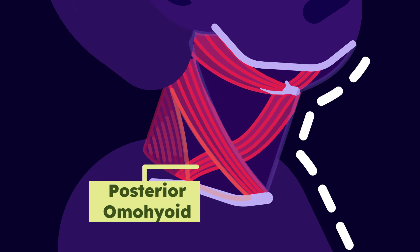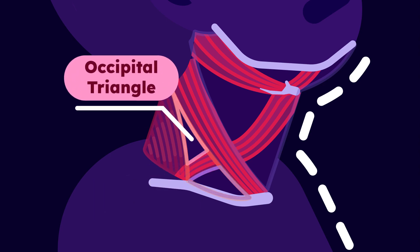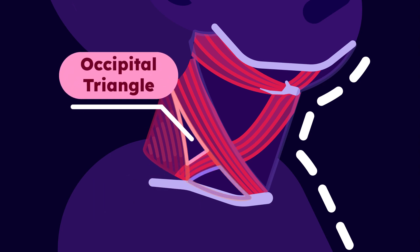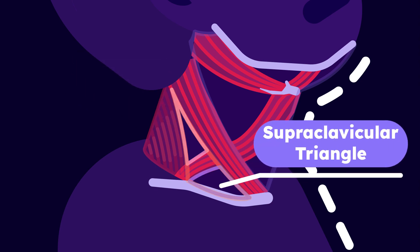Next, the posterior belly of the omohyoid muscle will divide the posterior area into two triangles: the occipital triangle, which is located above the posterior belly, and the supraclavicular, which is located below.